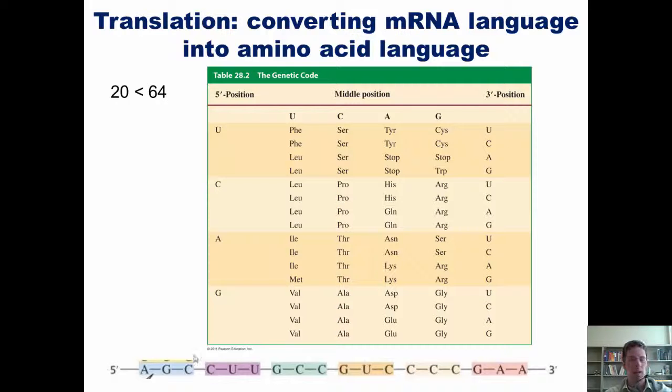The next three-nucleotide long sequence in our mRNA is CUU. What amino acid does that correspond to? I look at the table: C, U, and then I go down here, U. It's leucine.